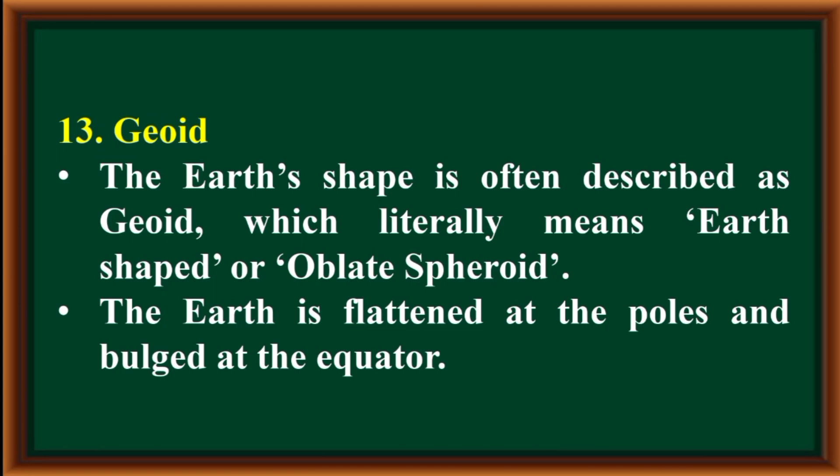Shape of the earth: the earth's shape is often described as geoid, which literally means earth-shaped, or oblate spheroid. The earth is flattened at the poles and bulged at the equator.